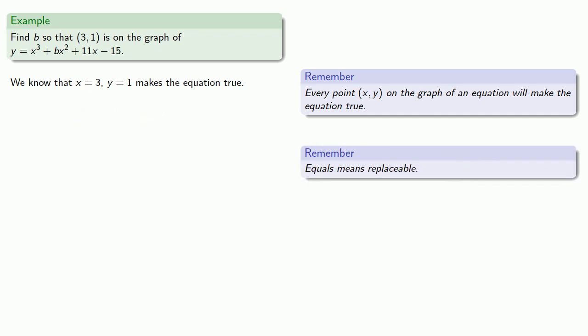So every place we see an x, we can replace it with 3, and every place we see a y, we can replace it with 1. So in our equation, we can replace and then solve for b.